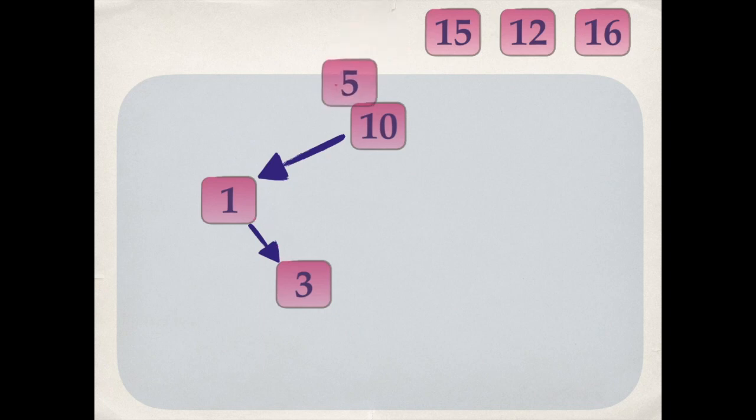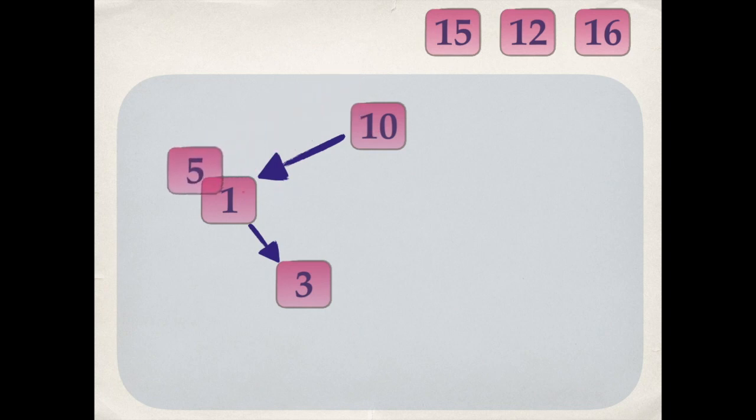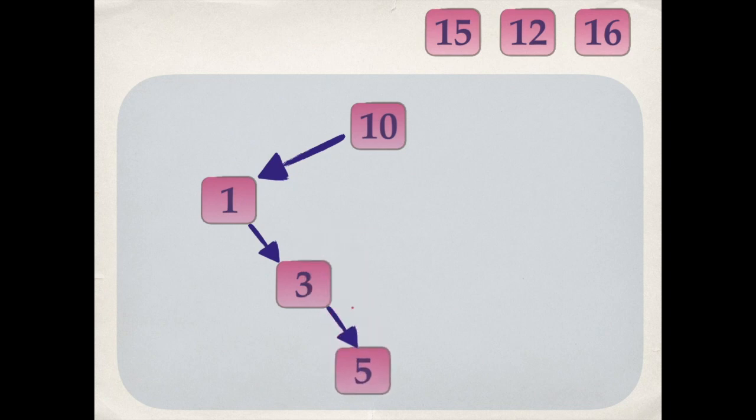Next number is five. Five is less than ten, so move left. Five is greater than one, so move right. Five is greater than three, so move right — five becomes the right child of three.